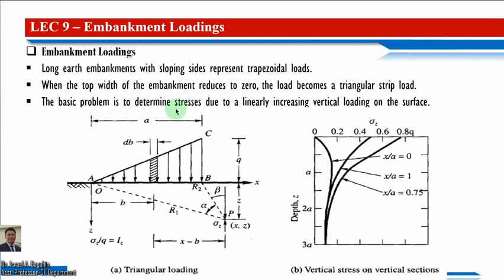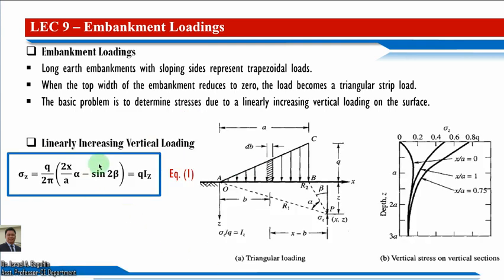The basic problem is to determine stresses due to a linearly increasing vertical loading on the earth's surface. As shown in the figure, the load increases from point A at zero to a finite value of q per unit length at point B. The equation for sigma z is equal to q over 2π times the quantity (2x/a) times alpha minus sine of beta, which equals q times the influence factor I_z.